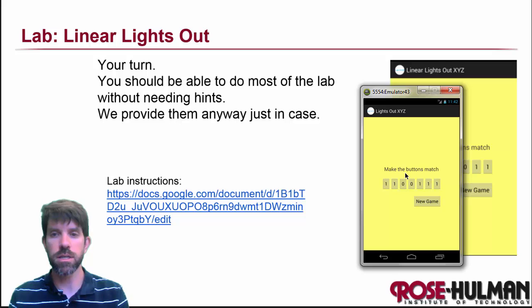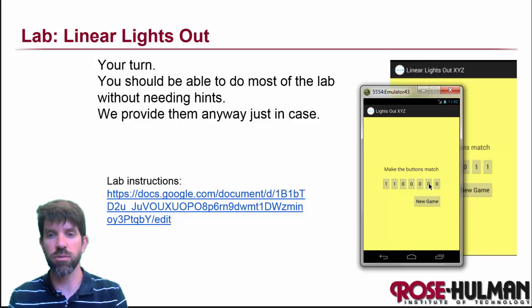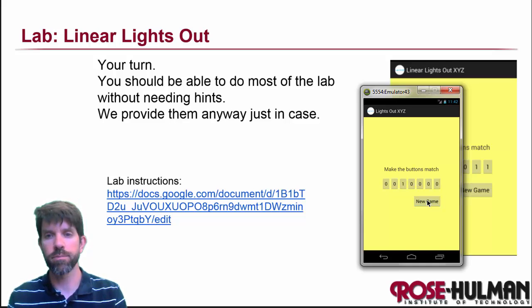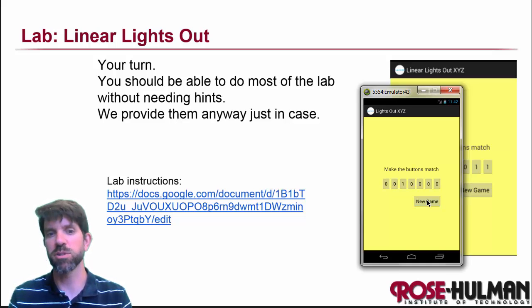The idea here is that with a 7x7 grid, I can do any chunk of 3. But if I click the one on the end it doesn't wrap around, so I just have 2 that are toggled. So if I click on the end it changes just those 2. Otherwise it would maybe be impossible to win.